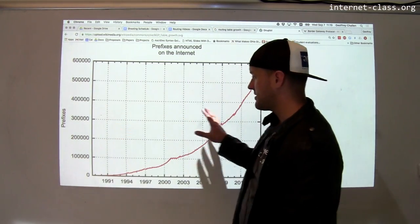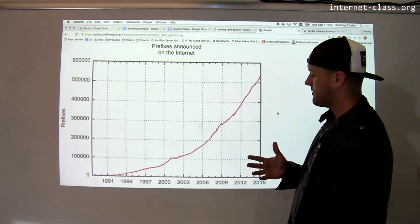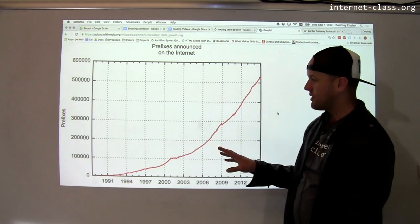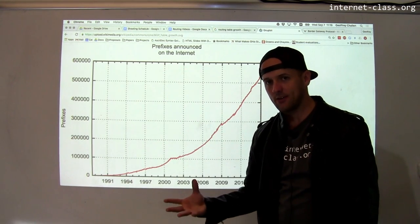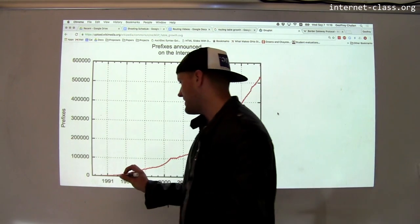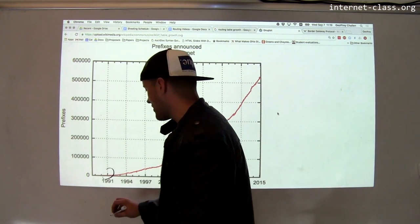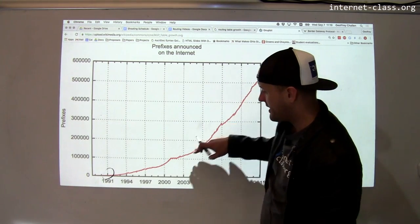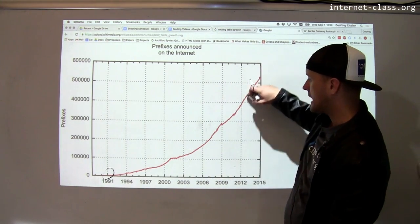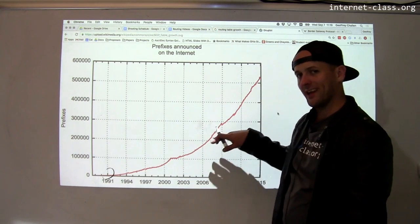So this is a fascinating chart that to some degree reflects something about the growth of the internet. But what really this is showing you is the number of prefixes that routers have to handle. So look at this. Back in 1991, the number is almost zero. And then we see this growth that is alarmingly, almost looks somewhat exponential.